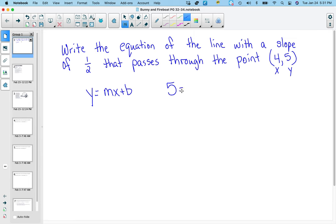So we would have 5, plugging that in for the y, equals one half x, one half and we would plug in a 4 plus b. So we would plug in the x and y value that we knew and solve for b. So we would get that b equals 3, and then we would know the equation of the line was y equals one half x plus 3.